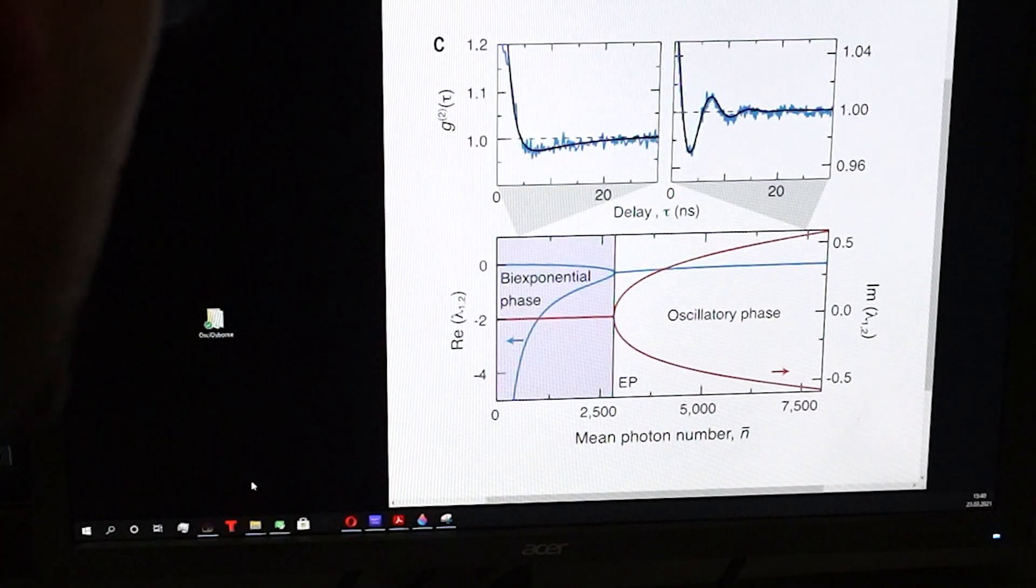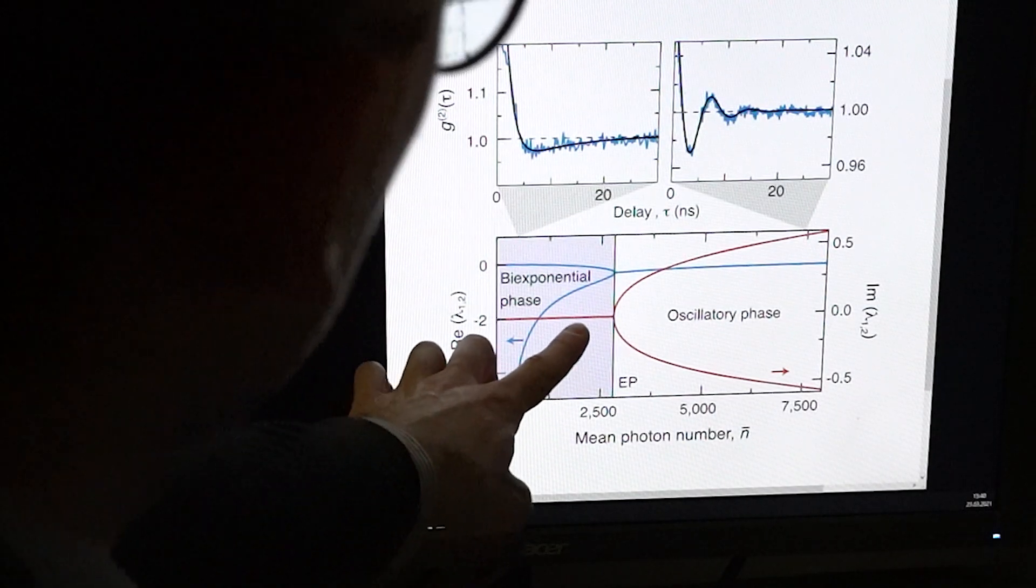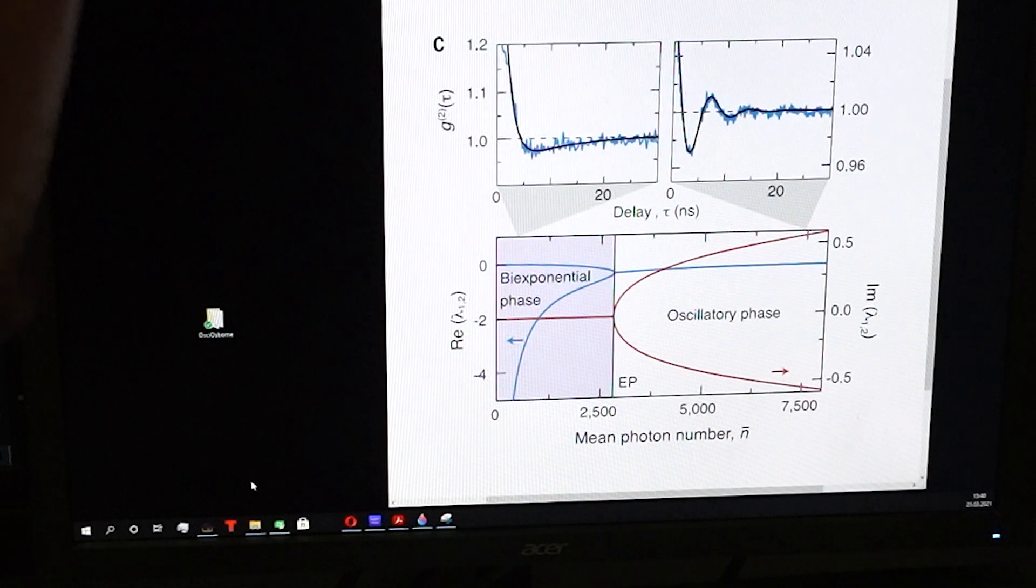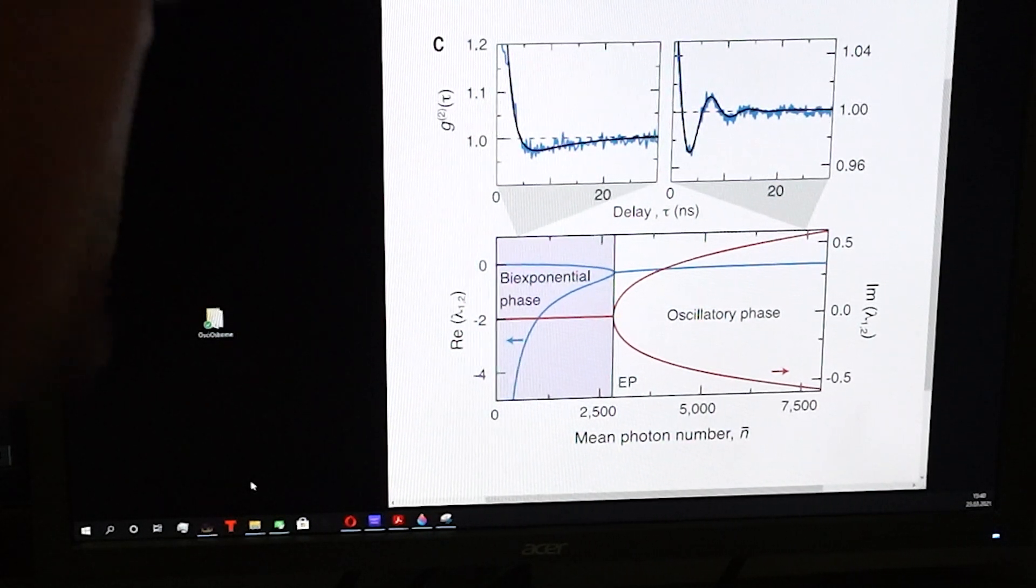The transition between both phases occurs exactly at an exceptional point, which was also predicted by the theory that was developed within this theory-experiment collaboration. The observation of a non-Hermitian phase transition opens new, exciting research directions.